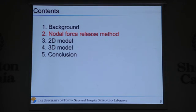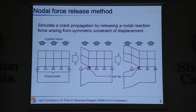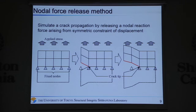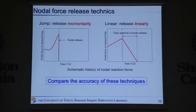I will now talk about the nodal force release method. This is a simple and robust method to simulate crack propagation in FEM. In this method, the nodal reaction force arising from the symmetry condition is released one by one, as shown in this figure. There are two basic techniques to release the force. One is to release the force momentarily — we call it 'jump.' The other is to release the force linearly — we call it 'linear.' As a preliminary investigation, we compare the accuracy of these two techniques.